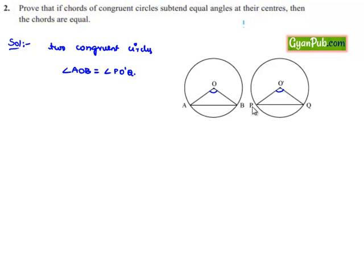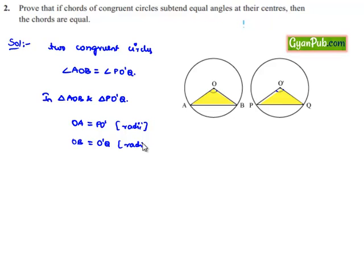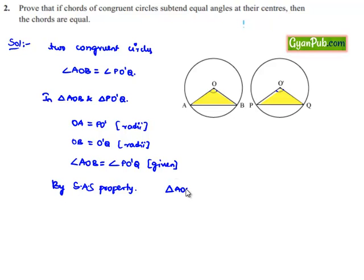We need to prove that AB is equal to PQ. In order to prove this, let us consider triangle AOB and triangle PO'Q. OA is equal to PO' and OB is equal to O'Q since both circles are congruent, so their radii are equal. And it is given that angle AOB is equal to angle PO'Q. Now by the SAS property of congruency, we can say triangle AOB is congruent to triangle PO'Q. Therefore, since the two triangles are congruent, their corresponding sides can be equated, so AB is equal to PQ.